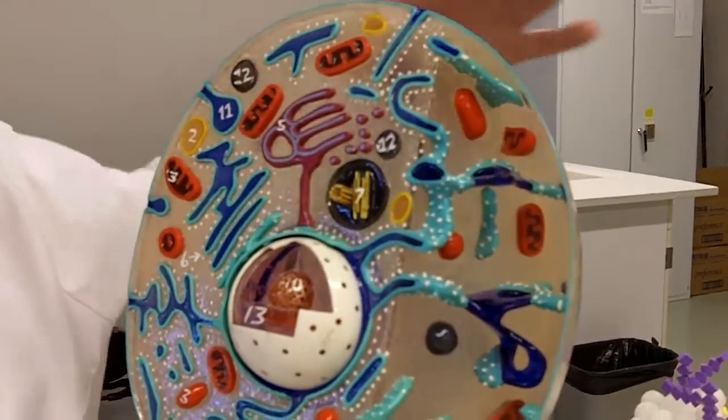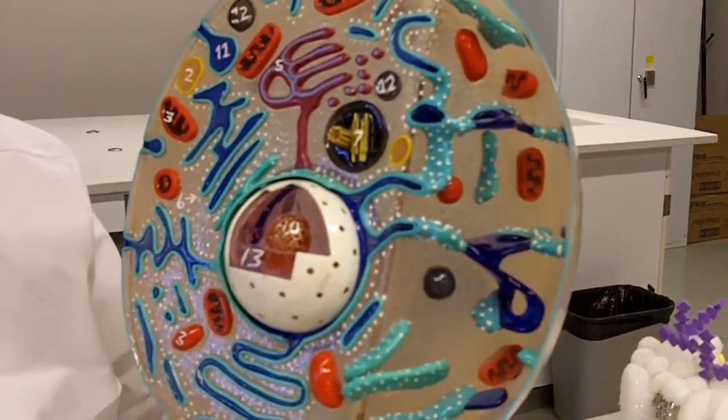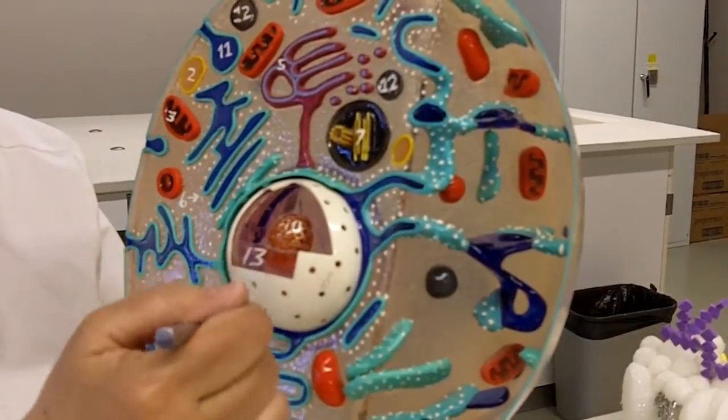This one has the typical plasma membrane on the outside, but it's not shown in detail. Inside we have the nucleus, the largest organelle.